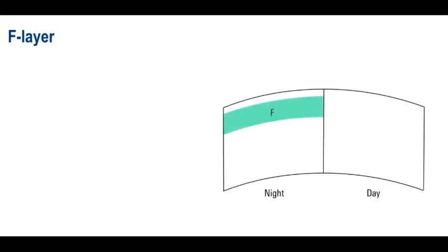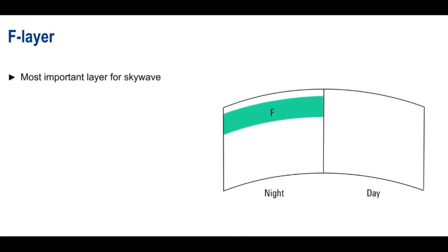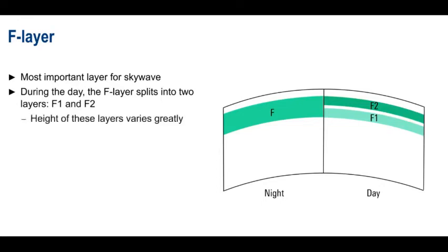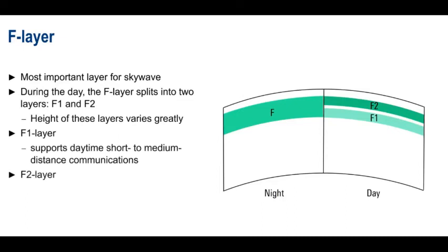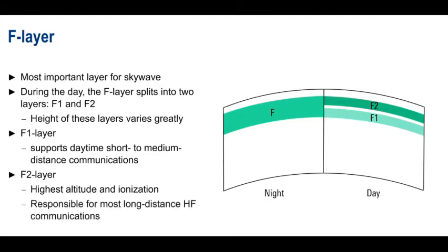The F layer is the most important for skywave propagation. During the day, the F layer splits into two sublayers, F1 and F2, which merge back into a single layer again at night. Compared to the D and E layers, the height of the F layers changes considerably based on things such as time of day, season, and solar conditions. More on this shortly. The lower F1 layer primarily supports short-to-medium distance communications during daylight hours. The F2 layer, on the other hand, is present more or less around the clock. It has the highest altitude and the highest ionization of all the layers, and is therefore responsible for the vast majority of long-distance HF communications.